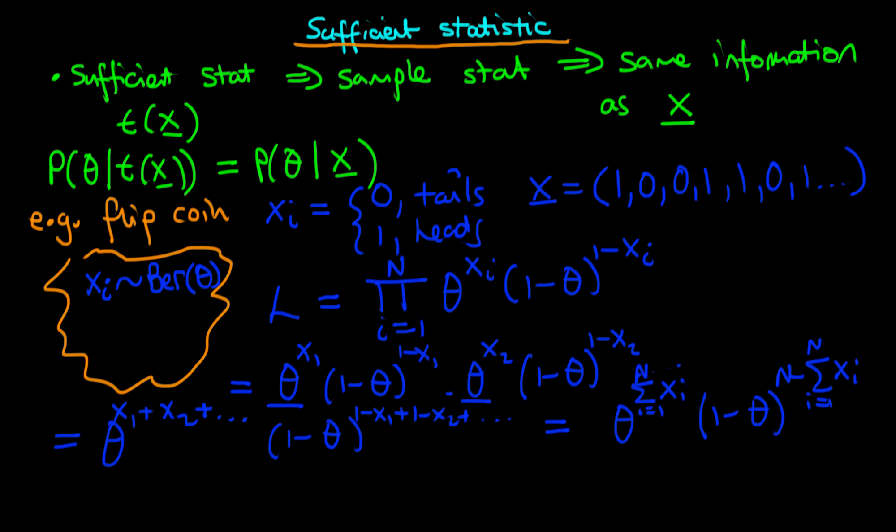So we notice something straight away here, that essentially our likelihood depends on this quantity, this sum from i equals 1 to n of xi. And the data only enters our likelihood in this particular form. So what does this tell us? Well, it tells us if we know this summary statistic, which I'm going to call t of x, which is equal to the sum from i equals 1 to n of xi, then essentially we know everything that is useful from our sample to be able to do inference.